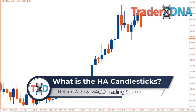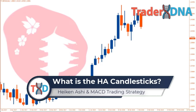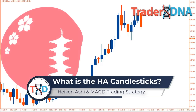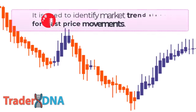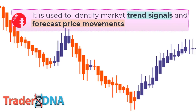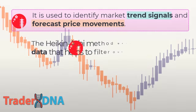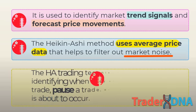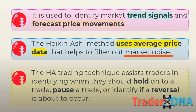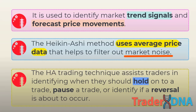What is the Heiken Ashi candlestick? The Heiken Ashi is a Japanese candlestick-based technical trading tool that uses candlestick charts to represent and visualize market price data. It is used to identify market trend signals and forecast price movements. The Heiken Ashi technique averages price data to create a Japanese candlestick chart that filters out market noise. The absence of market noise results in a clear illustration of market trends and direction, which helps determine potential price movements. The trading technique assists traders in identifying when they should hold on to a trade, pause a trade, or identify if a reversal is about to occur.